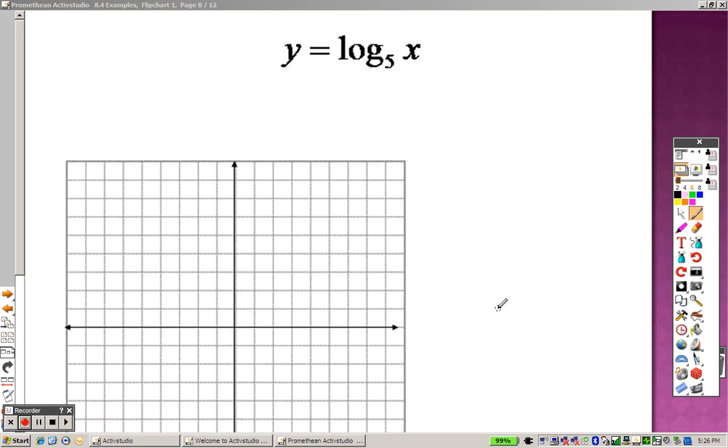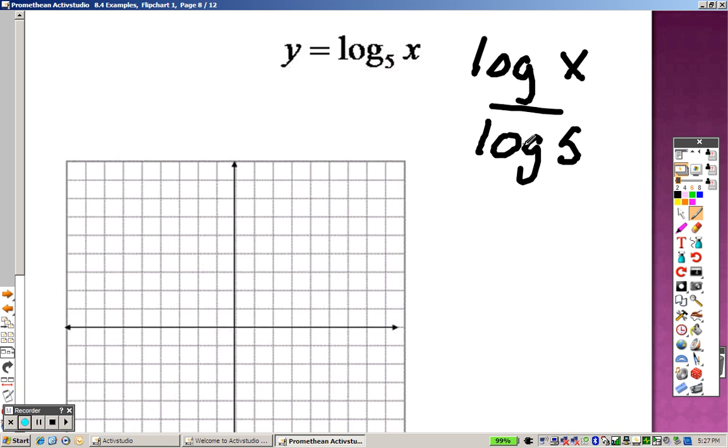Alright, continuing 8.4 with logs, now we're on graphing logs. Know how I just told you how to rewrite them in the last one to solve? Well, you can't graph these unless you rewrite them. You need to write this as log x over log 5. That's the only way you can graph that on your calculator.